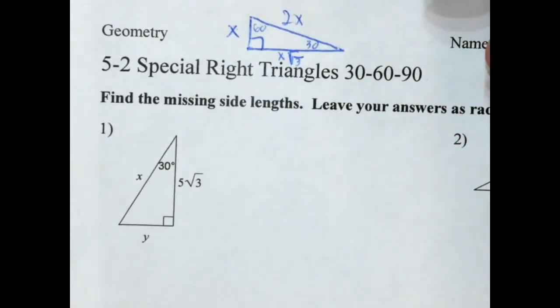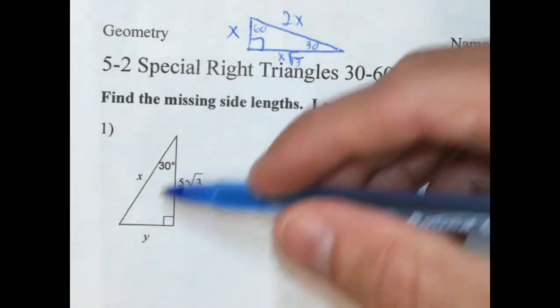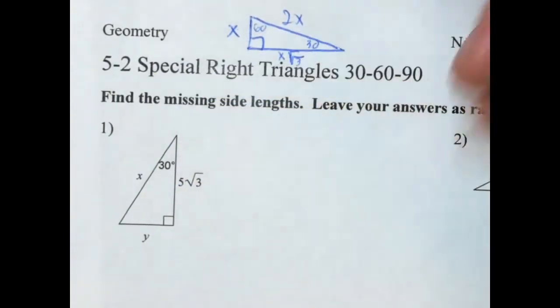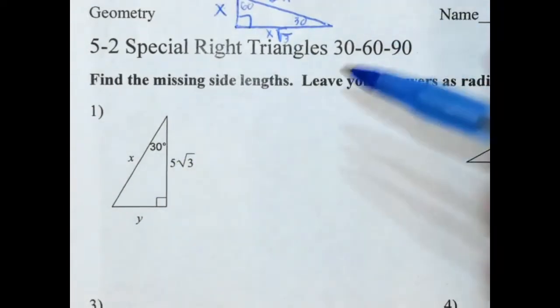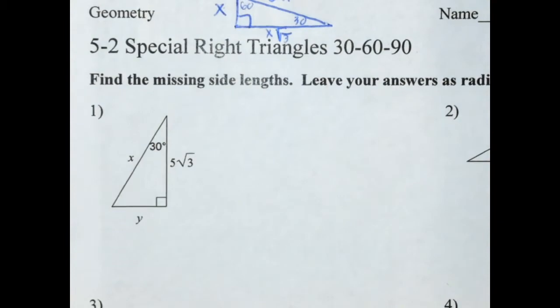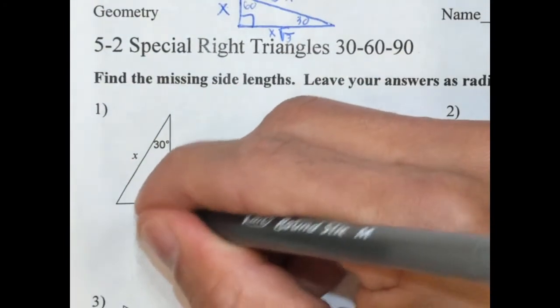Just like the 45-45-90s, very often they will not tell you all three angles. They'll give you two of them, and you have to figure it out. You have to be able to recognize it. So now we're going to go right to it. Just like before, we're going to get rid of these variables because they're confusing us.